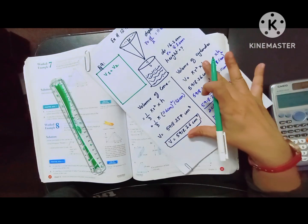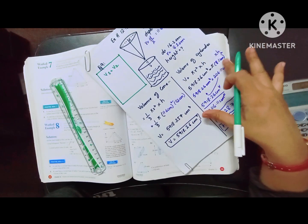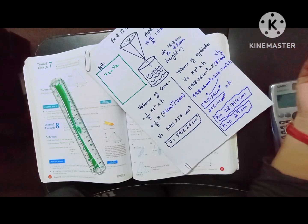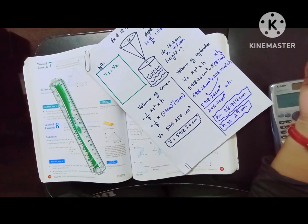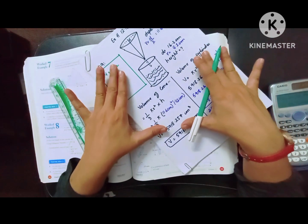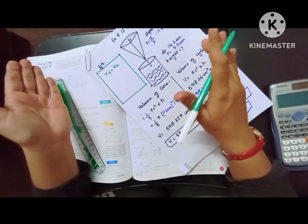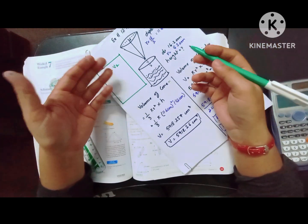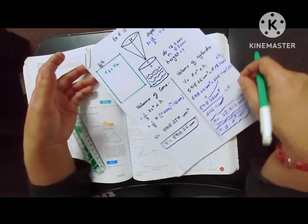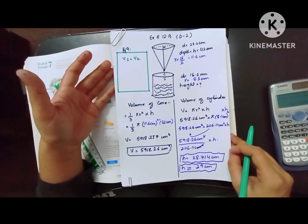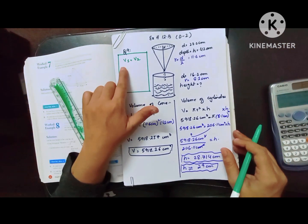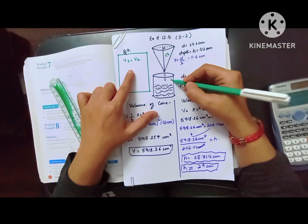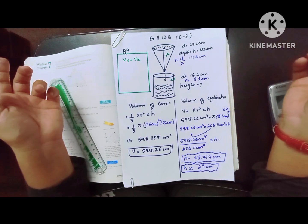Volume जो cone का निकाला था, उसको हमने comparison में cylinder के formula में डाला, और height find कर ली। यह simple सा question है। इसी तरह के बहुत सारे questions chapter 14 में भी हैं — एक solid figure से liquid pour करें दूसरे solid figure के अंदर। V1 = V2: volume of the cone equals volume of the cylinder।